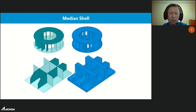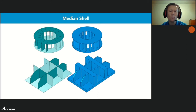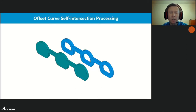The functionality of the median shell has been improved — you can now set a range of thicknesses instead of a single value. Disconnected faces now reach each other until they intersect, and processing in the fillet area was improved. In sweeping operations such as extrusion and rotation, offset curve and self-intersection processing was improved, allowing you to build options as shown on the slide.